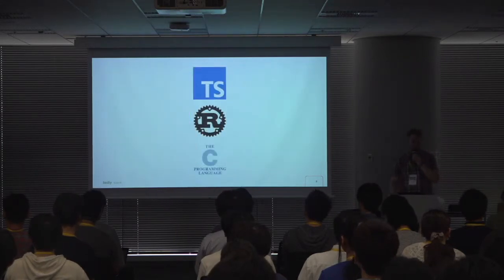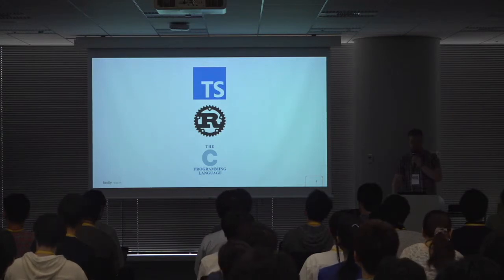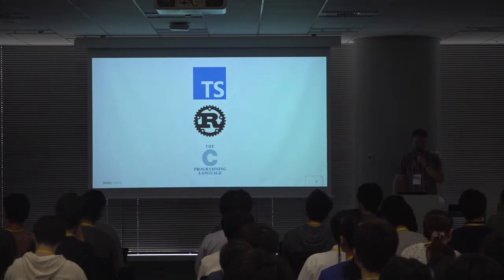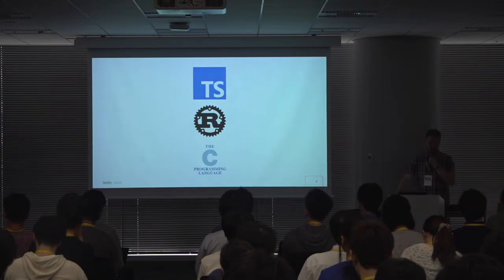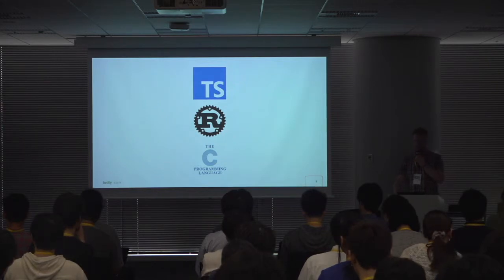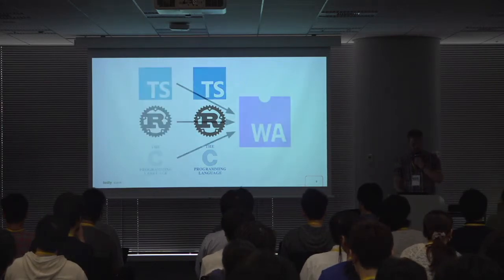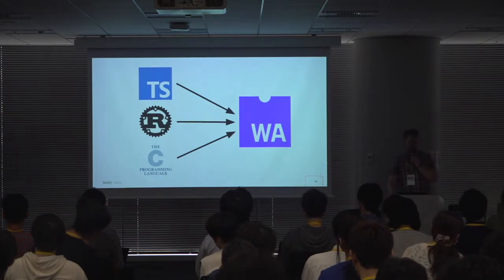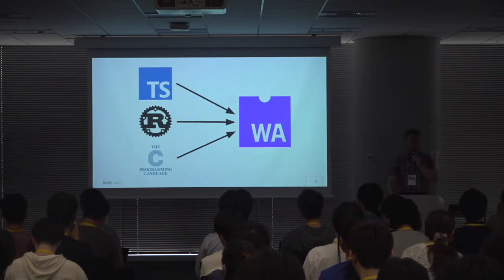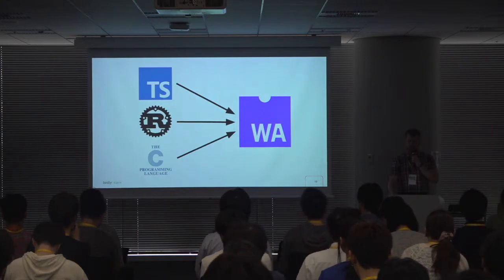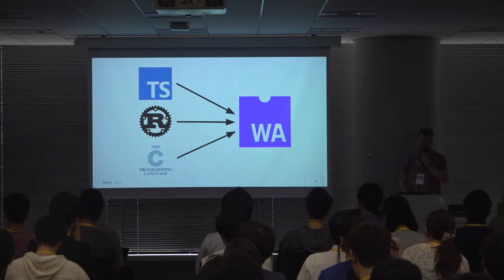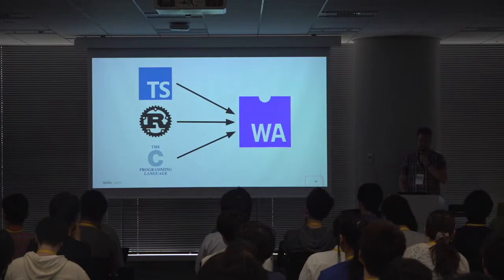Right now, WebAssembly is mostly targeted by statically typed languages with no garbage collection. The most mature of these language backends are for C, C++, Rust, and TypeScript. There are lots of others in various phases of development, such as backends for Go and Swift, but we can do quite a bit already with just these four languages. The first step in our story is taking programs written in these languages and compiling them into WebAssembly.